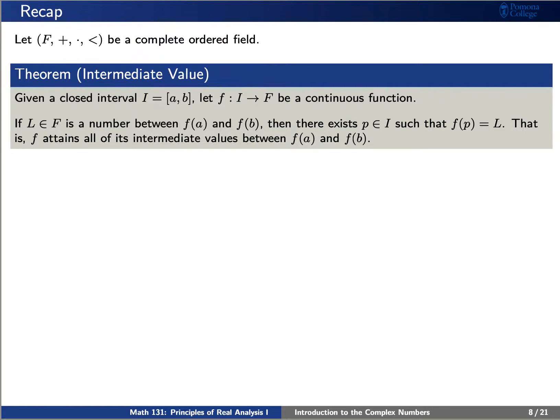Let's let f be a complete ordered field. Recall the intermediate value theorem. If we have a continuous function on a closed interval i from a to b,